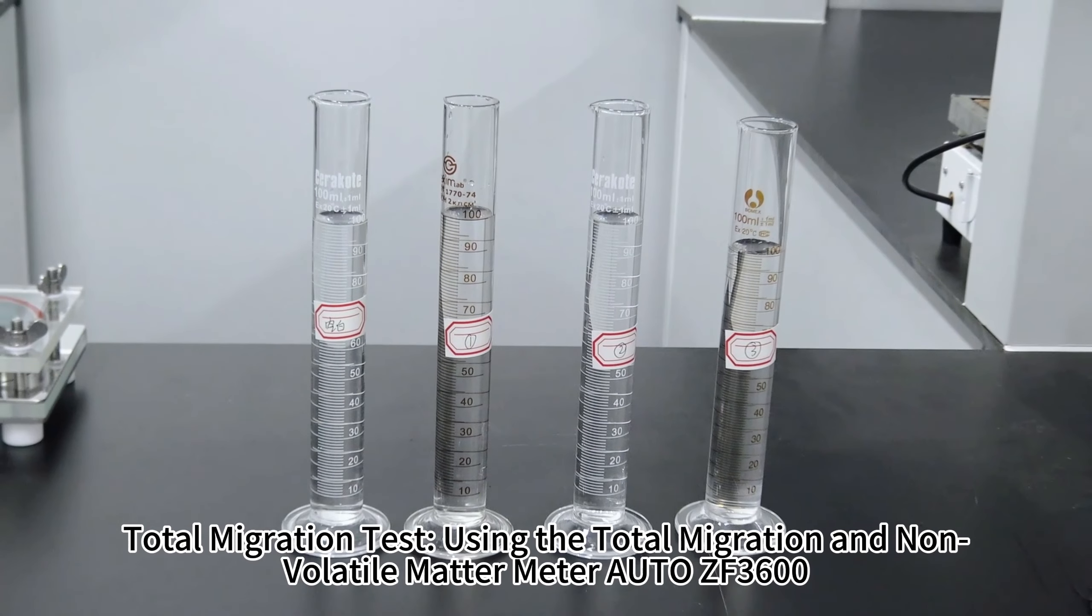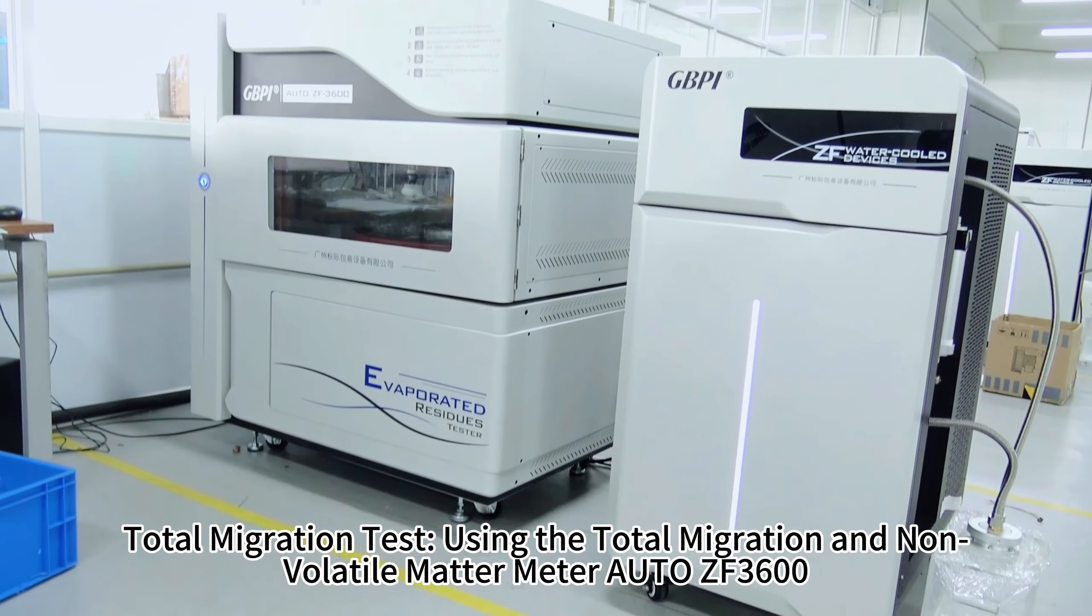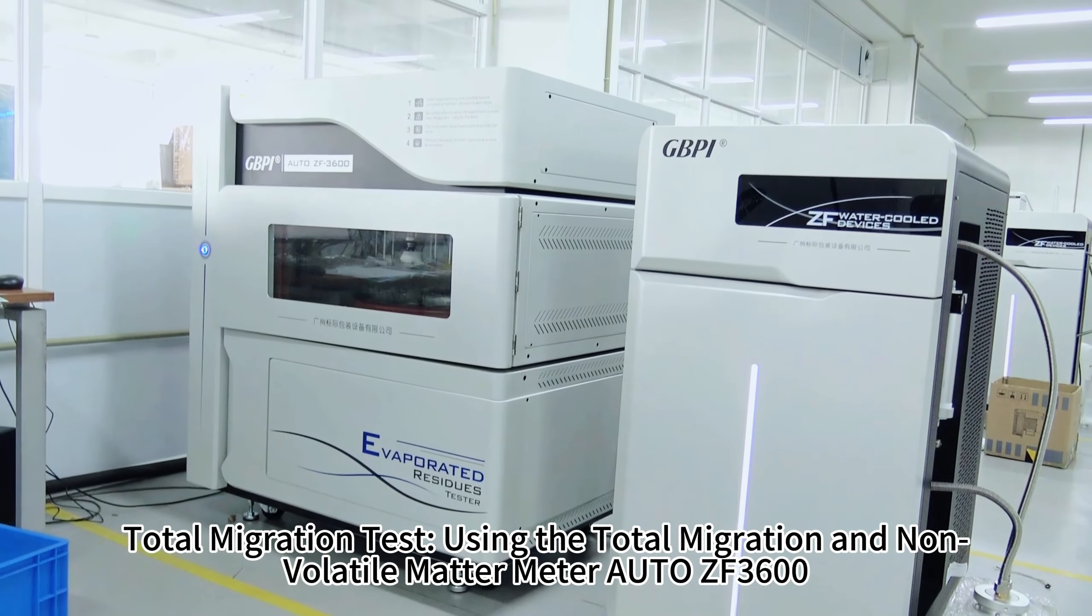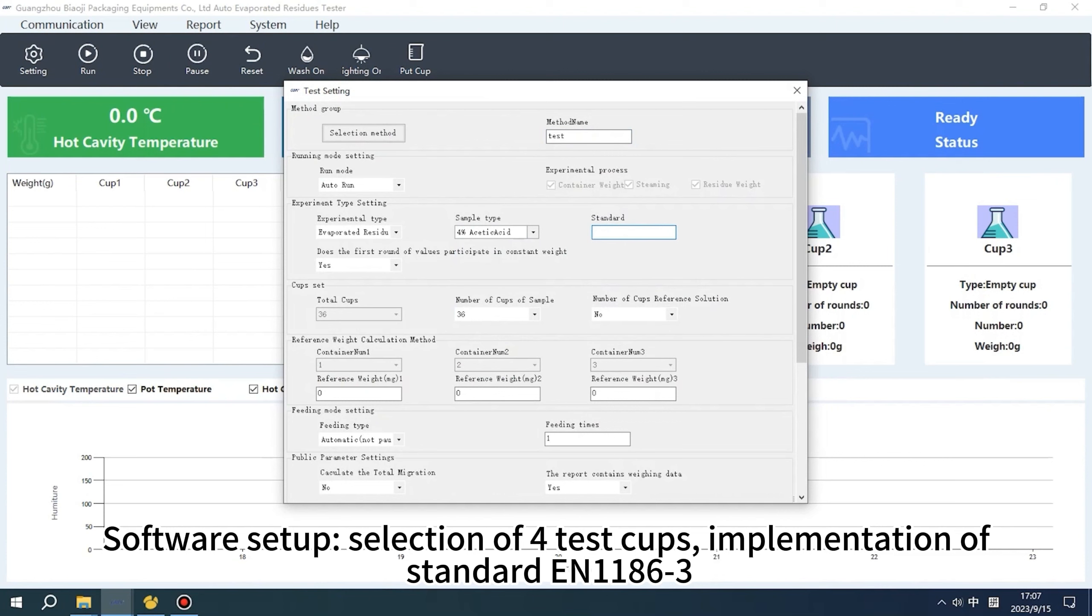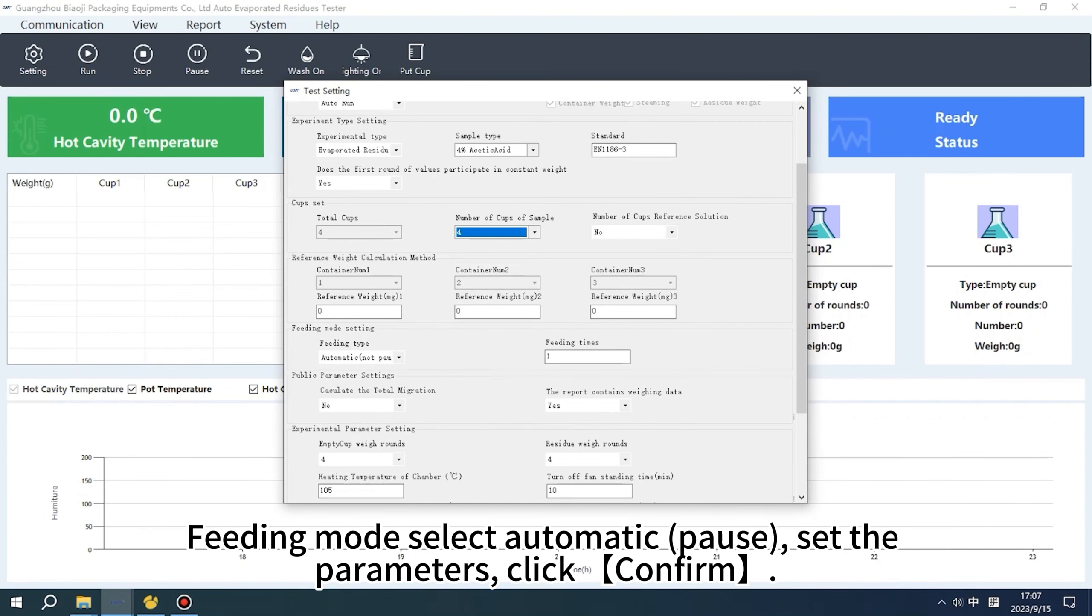Total migration test using the Total Migration and Non-Volatile Matter Meter Auto ZF 3600. Testing of food simulants after migration test immersion. Software setup: selection of 4 test cups, implementation of standard EN 1186-3.